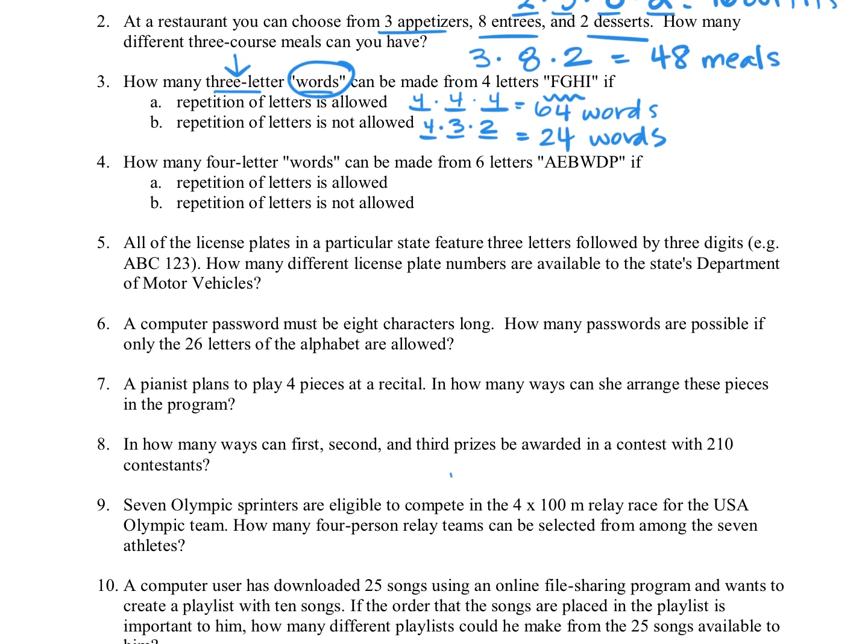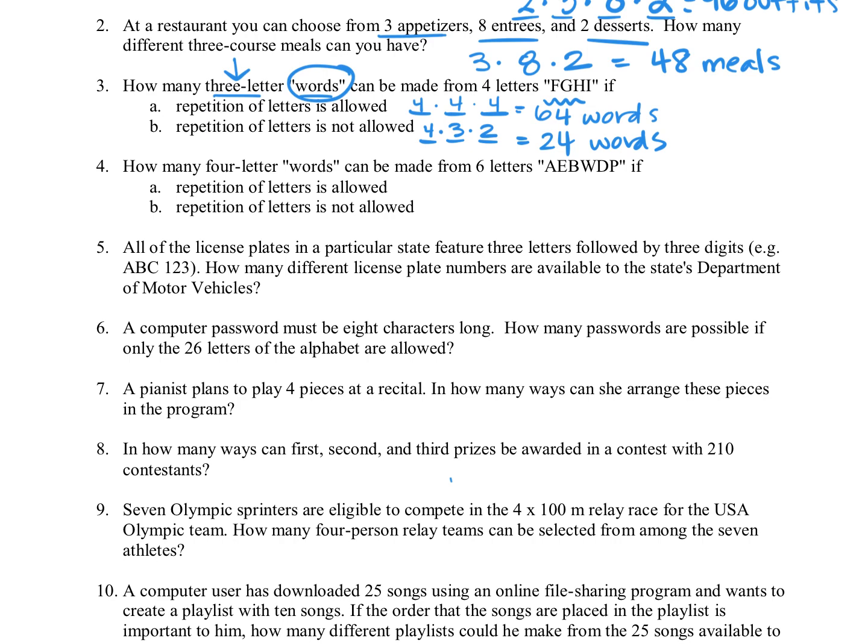If repetition isn't allowed, if we use the F for example, there's four ways to choose that first letter of the word. If we choose F, then there would be only three letters left, and then there'd be only two letters left. So that's going to reduce our possibilities, and we'll have only 24 words for that one. For number four, very similar, except we're looking at four-letter words, and we have six letters to choose from.